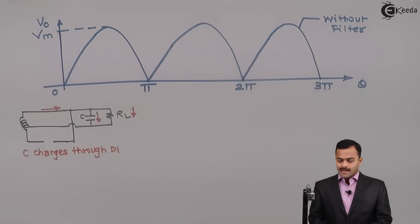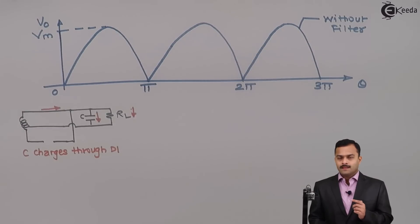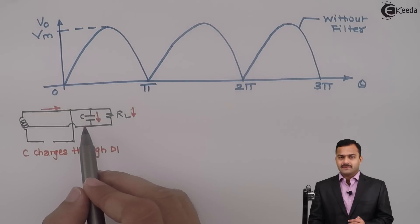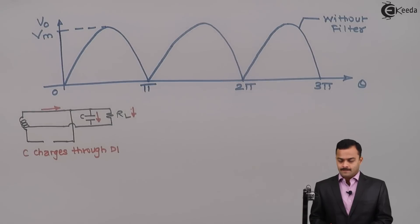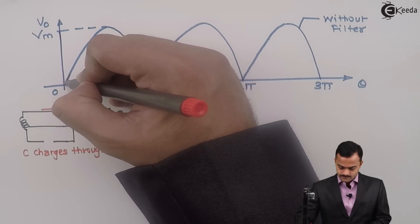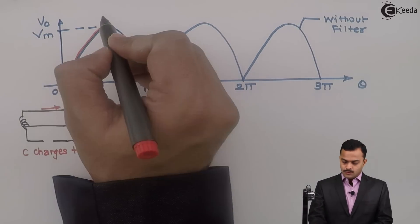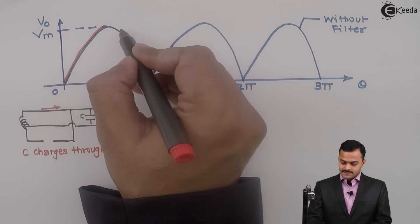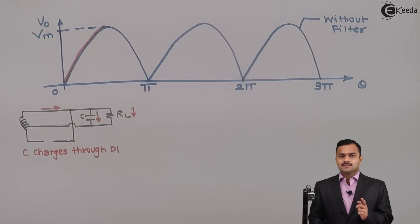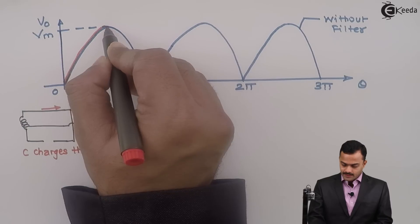But that will not continue till the complete half cycle. Why? Because whenever we charge a capacitor, its voltage keeps on increasing. The charging of capacitor will be like this - it will reach peak. But what happens after peak? It will not follow this path directly because capacitor doesn't allow instantaneous change in voltage. Up to this point only diode D1 conducts.